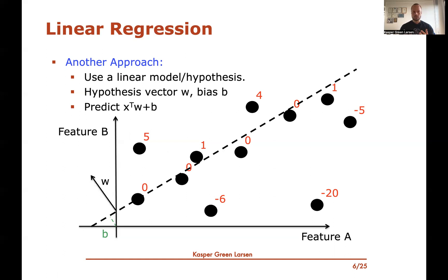One important thing here is that unlike the classification case where we took the sign of the inner product — and the scaling of w didn't matter — here, if I scale w by a factor of 2 or 4, the output prediction value would also scale by 2 or 4. So the model is not scale-invariant with respect to w. The length of w actually matters for the predictions. Points further above the hyperplane have larger inner products with w, and points further below have more negative predictions.